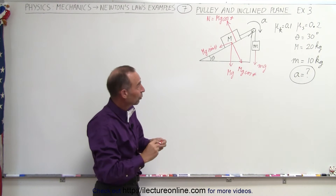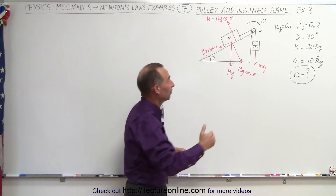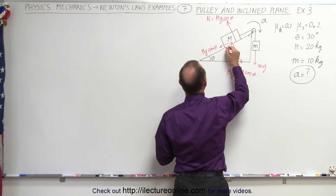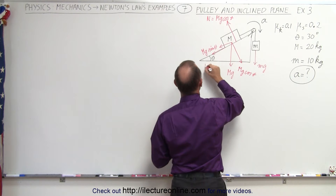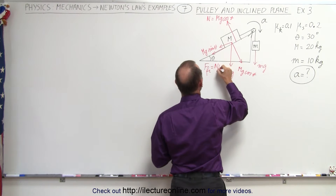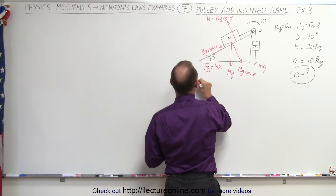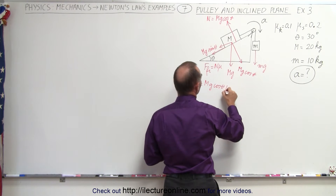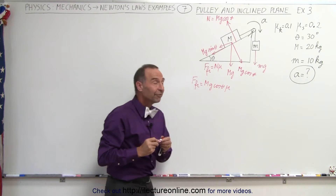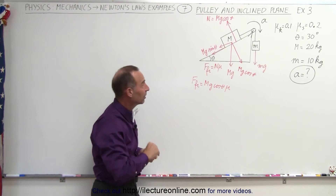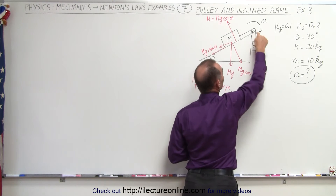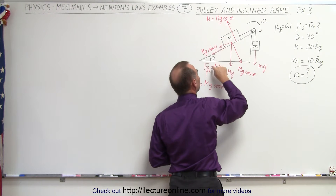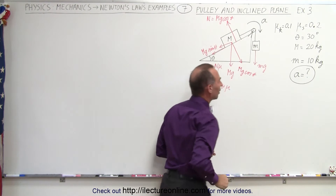The direction of the friction force will be opposite to the assumed acceleration. Since the acceleration of the system is assumed to be in this direction, the friction force will be in the opposite direction. The friction force equals the normal force times mu, so the friction force equals big mg cosine theta times mu. Now we've identified all the forces affecting the acceleration: small mg aids the acceleration, while mg sine theta and the friction force oppose the direction of acceleration.